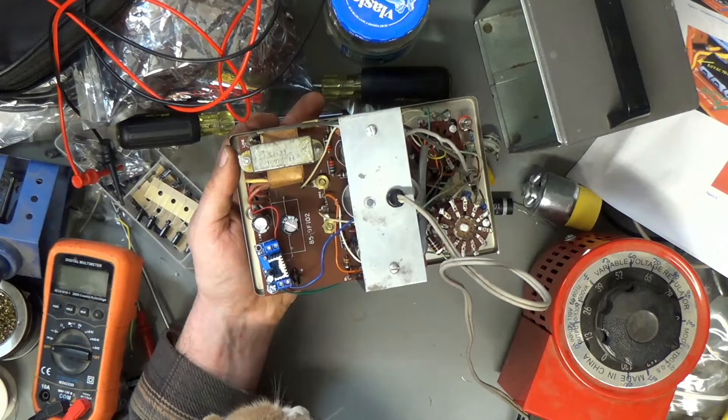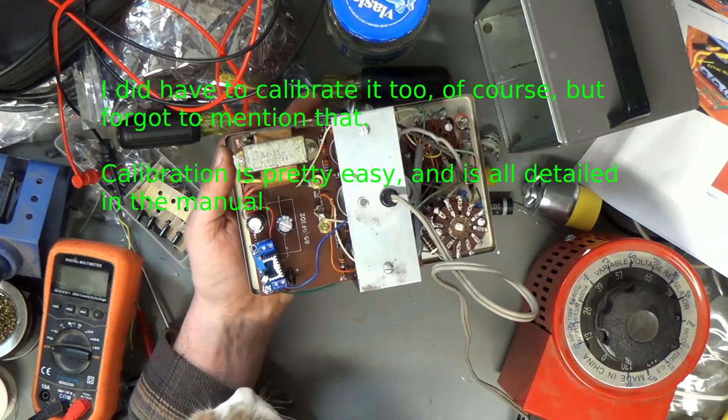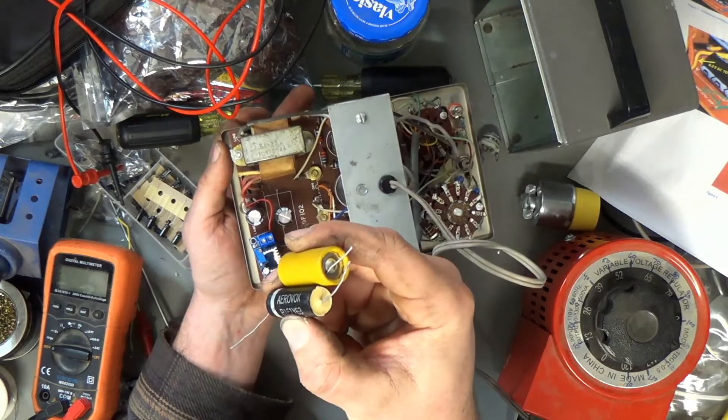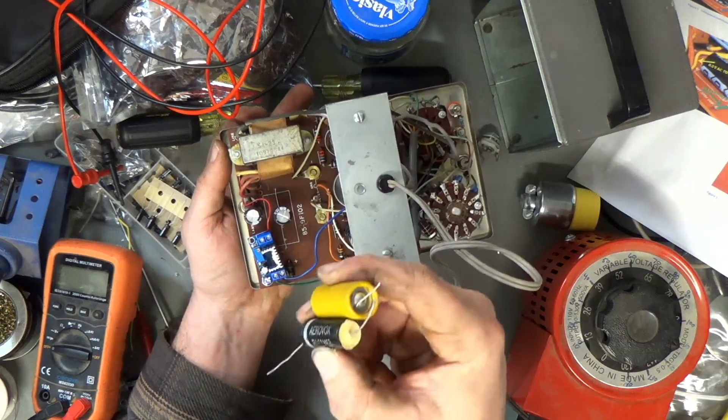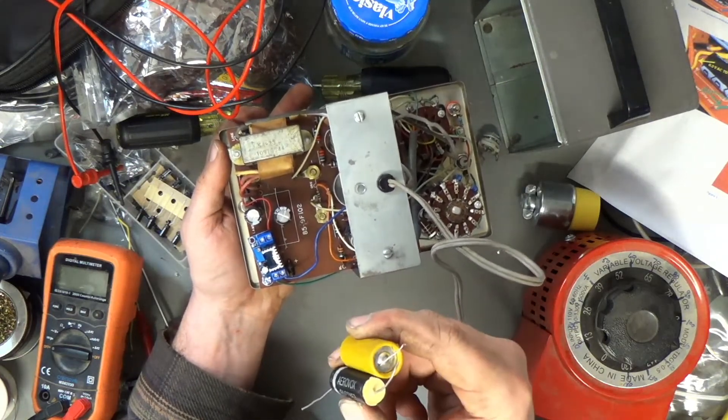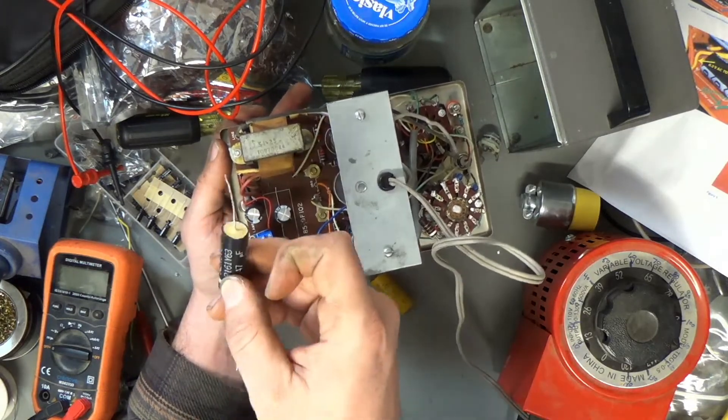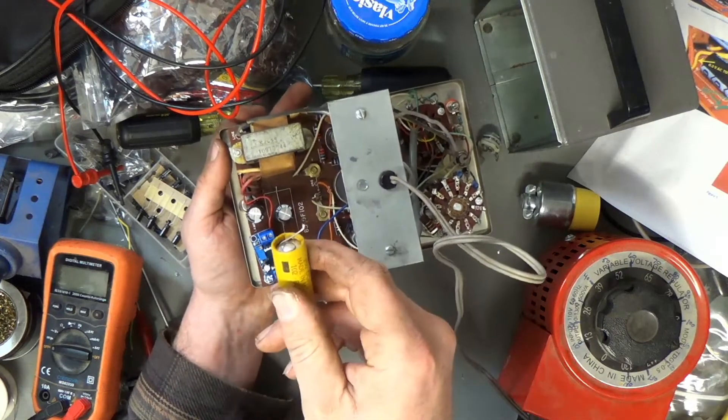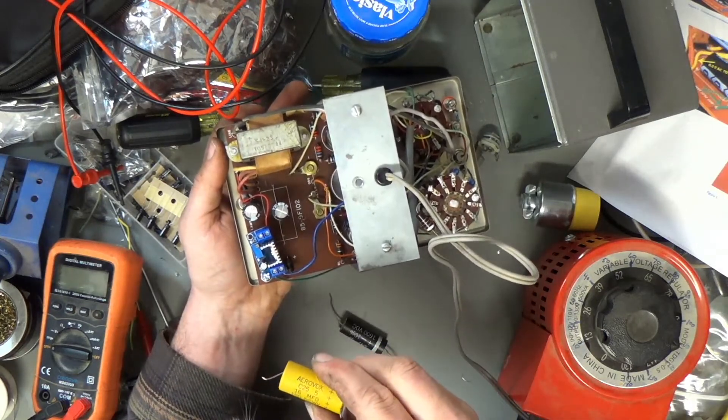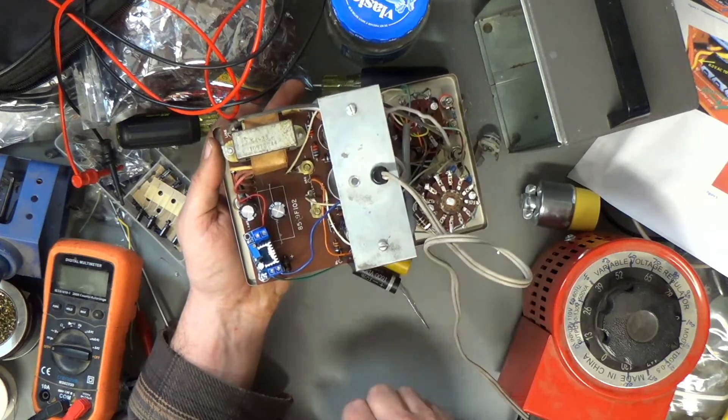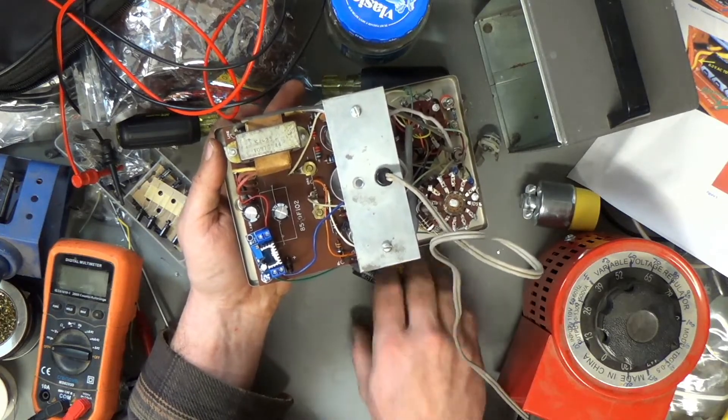I'm gonna call this done and put it back together. It turns out those two capacitors that I took out both test fine on the low voltage capacitor tester. Now this is a 1600 volt capacitor and this is a 150 volt capacitor, so neither of them were tested near their breakdown voltage.